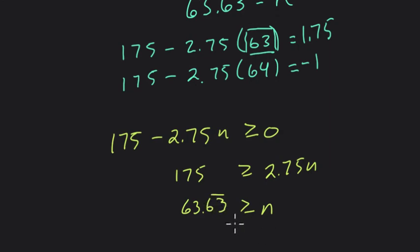She won't have to pay for anything. Any point after that, as soon as n is larger than 63.63, she'll have to start paying. Alright, hope that helped.